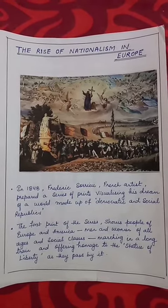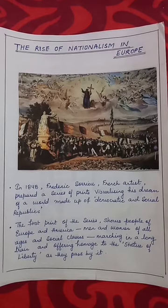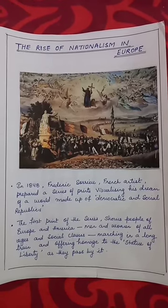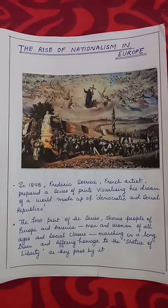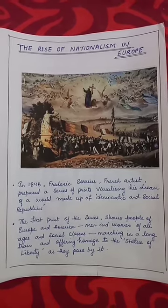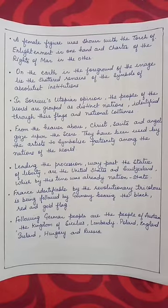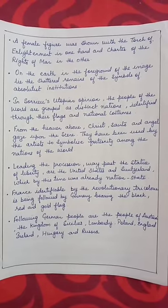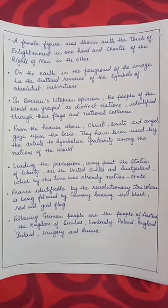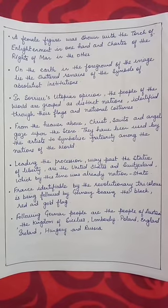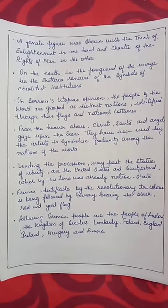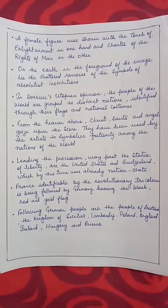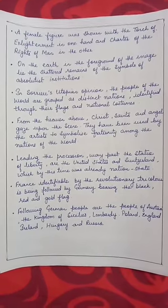The people are offering homage to the Statue of Liberty as they pass by it. In this picture, a female figure is shown with a torch of enlightenment in one hand and the Charter of the Rights of Man in the other. In the foreground of the image lie the shattered remains of the symbols of absolutist institutions.